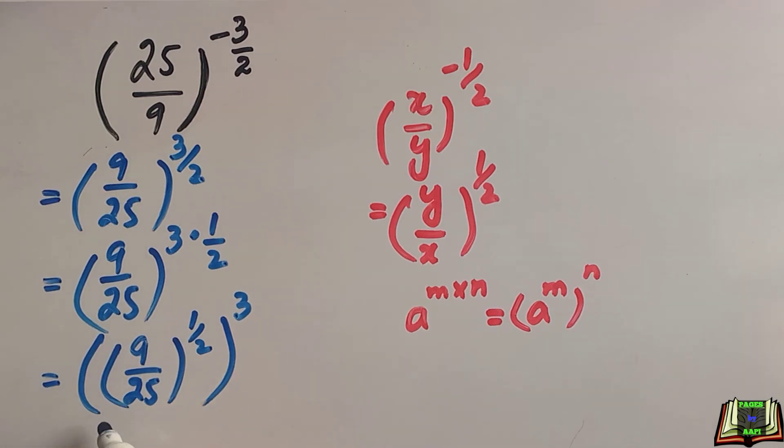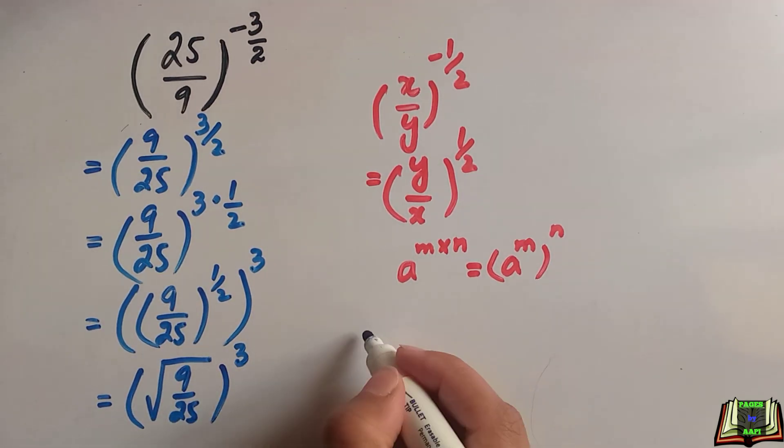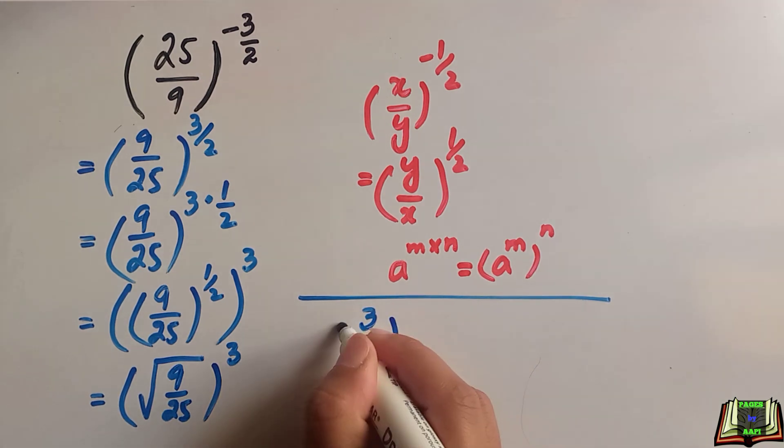We know that the value of square root is 1 over 2. So we are going to write 9 over 25 in square root and whole power 3, and square root of 9 is equal to 3 and square root of 25 is 5 whole power 3.